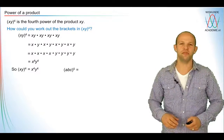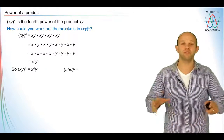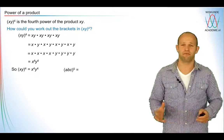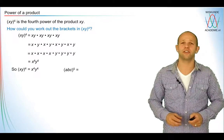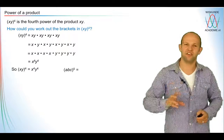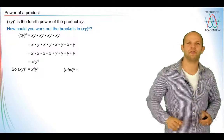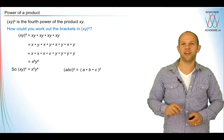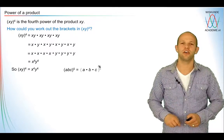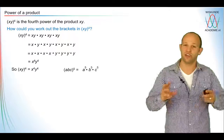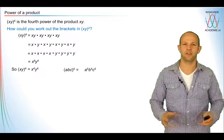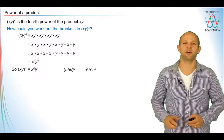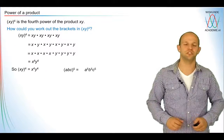In the same way, (abc) within brackets to the power five — we can actually work out the brackets by taking the fifth power of every single part within the brackets. Because we know that abc means a times b times c. The power five can be taken of every single part of it, and we can write these all together again as a to the power five, b to the power five, c to the power five.